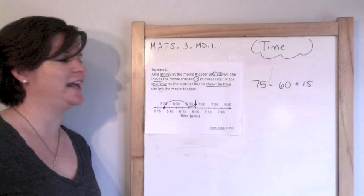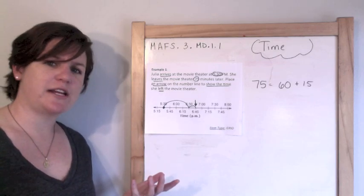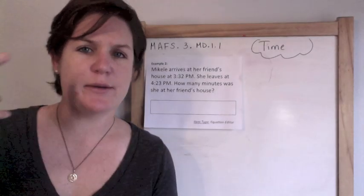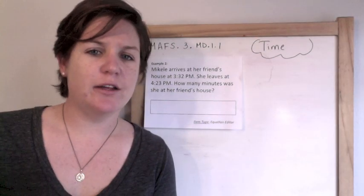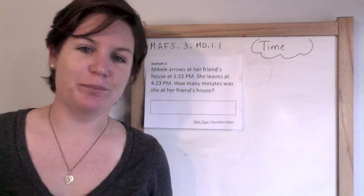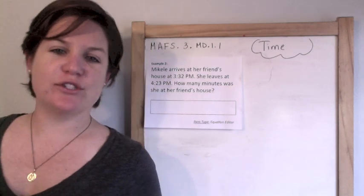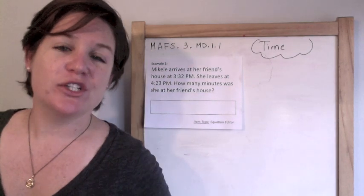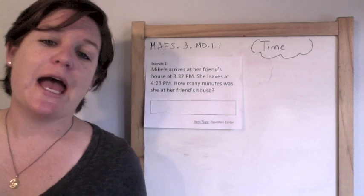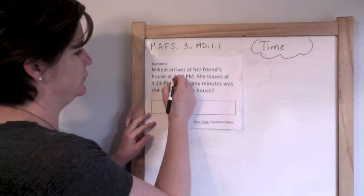I don't know why they're having you put an arrow there, but that's what they showed in the test item specs. Example 2. Mikkel is a student that I teach at my school. Mikkel arrives at her friend's house at 3:32. She leaves at 4:23 p.m. How many minutes was she at her friend's house?